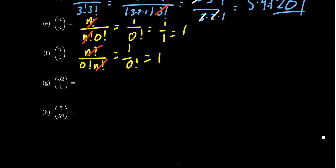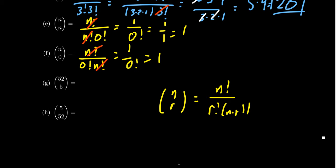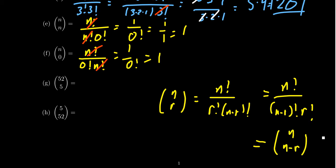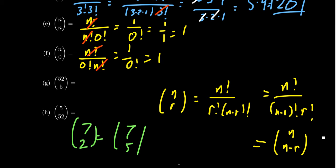Now let me give some explanation about these binomial coefficients. One thing we just observed is that n choose r equals n factorial over r factorial times n minus r factorial, which is the same as n factorial over n minus r factorial times r factorial — which equals n choose n minus r. So if you swap the number on the bottom to its complement, you always get the same result. This is why n choose n and n choose 0 are equal, because 0 plus n equals n. For example, 7 choose 2 equals 7 choose 5, since 5 and 2 add up to 7.